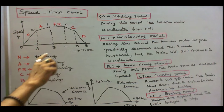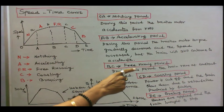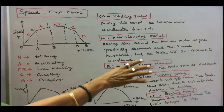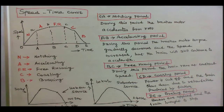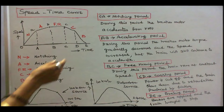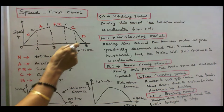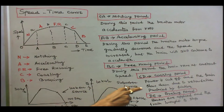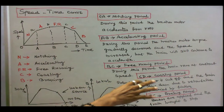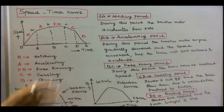Next is B-C, which is the free running period. During this period, the train runs at a constant speed. Another is C-D, which is the coasting period. Here the traction motor power is cut off and the train slows down due to retardation produced by friction.